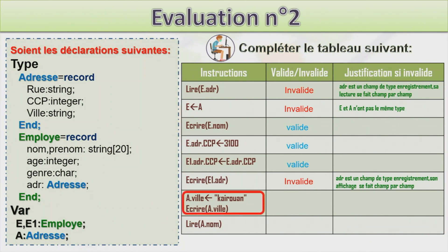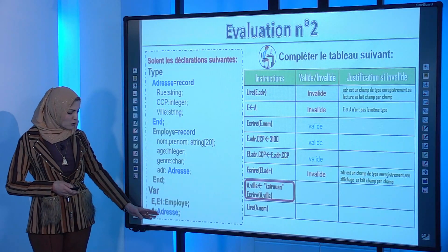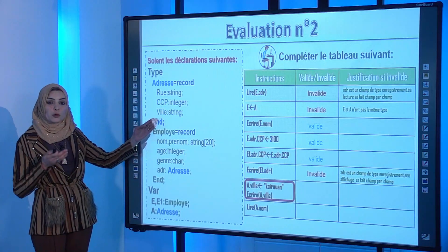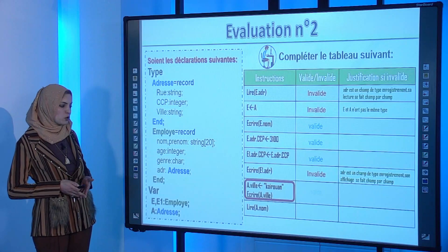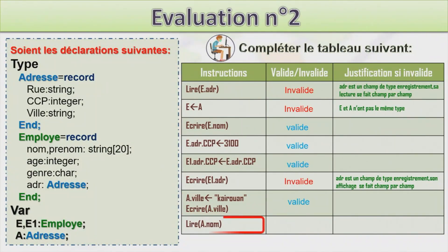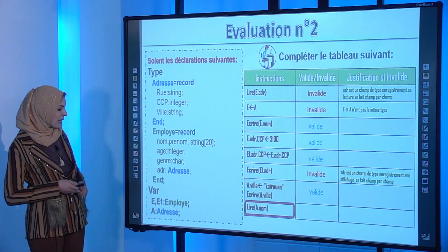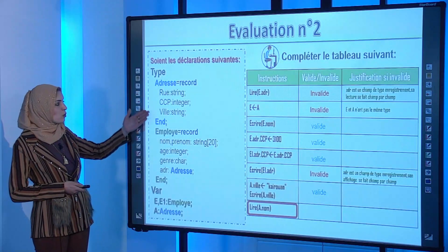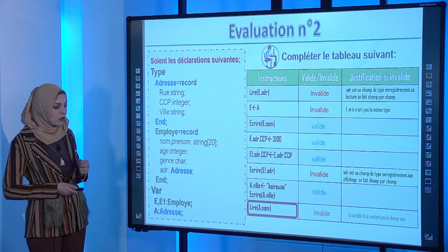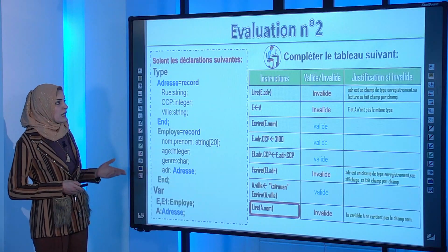A.ville ← 'Kerouan' puis écrire(A.ville) → valide, ville appartient au type adresse et A est de type adresse. lire(A.nom) → invalide, car le type adresse ne possède pas de champ nom, seulement rue, ccp et ville.